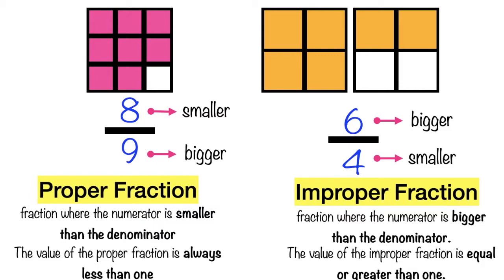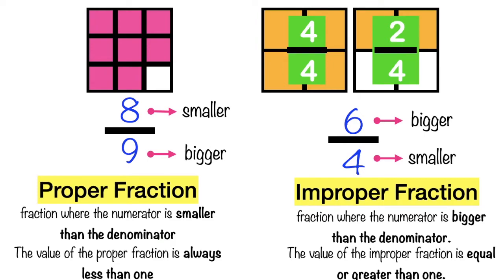Let's look at the illustration at the top. The first one, as you can see, all the parts are shaded. When all the parts are shaded, that means the fraction is 4 fourths, and 4 fourths is equal to 1. While in the second illustration, we have 2 shaded parts, so the fraction is 2 fourths. When you combine 4 fourths and 2 fourths, we will have 1 and 2 fourths. So, 1 and 2 fourths is equal to 6 fourths, and 6 fourths is greater than 1.